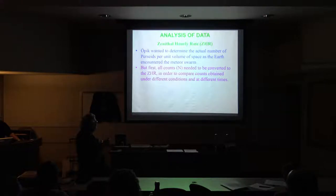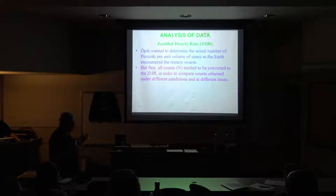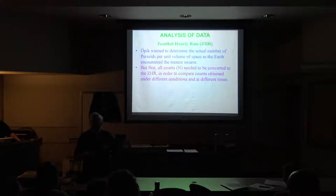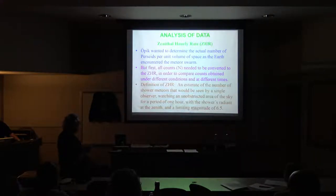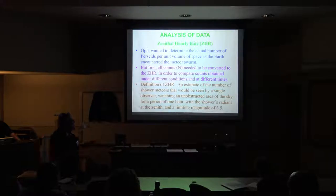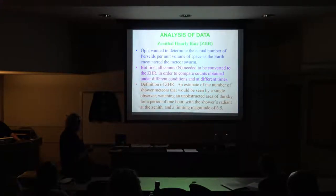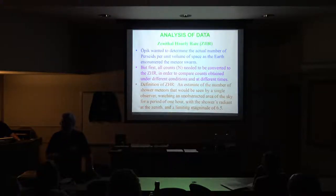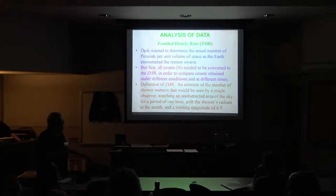First he had to determine the zenith hourly rate, which I've referred to as an impossibly optimistic count, but it's the only way to put all observations on a common footing. You correct for all the factors that keep you from seeing as many meteors as you could. The definition: an estimate of the number of shower meteors that would be seen by a single observer watching an unobstructed area of sky for one hour, with the shower's radiant at the zenith and a limiting magnitude of 6.5. That's why the ZHR number in the tables is always so much higher than anything you're likely to see.